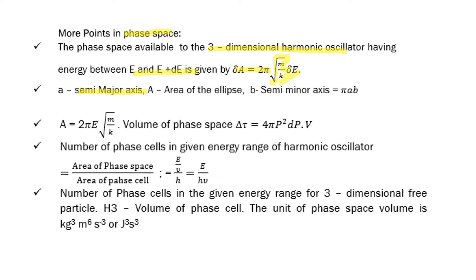A is the area of the ellipse, b is the semi-minor axis. A equals 2πE√(m/k). Volume of phase space Δτ equals 4πp²dp·V. The number of phase cells in given energy range of harmonic oscillator: area of phase space divided by area of phase cell, that is E/ν divided by h.